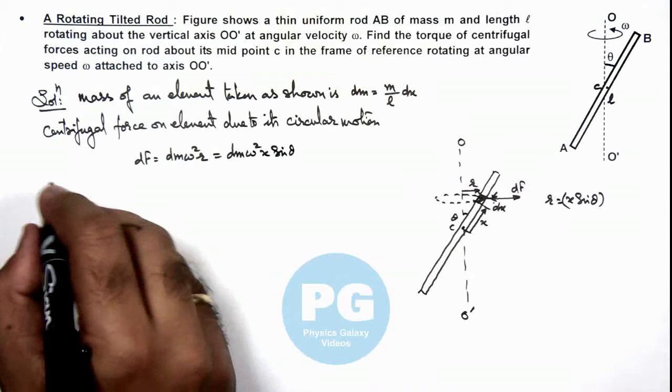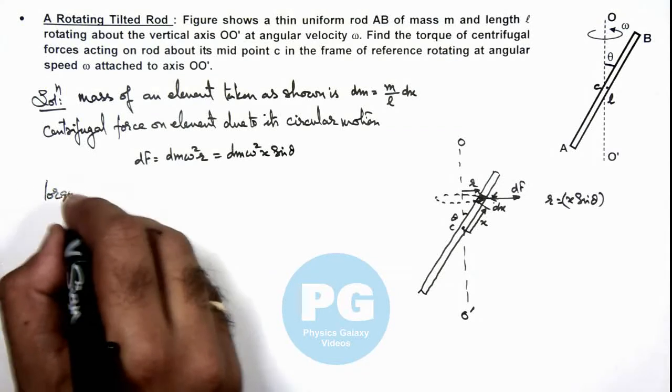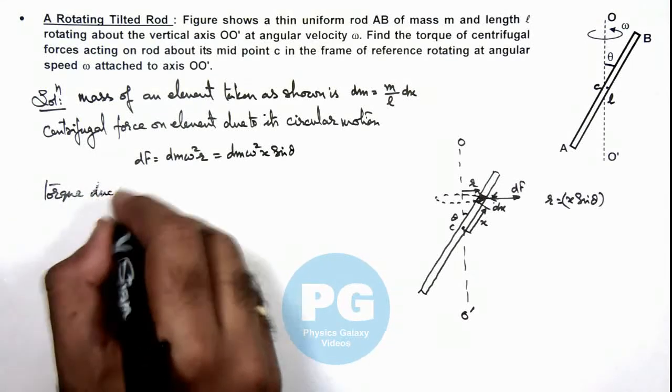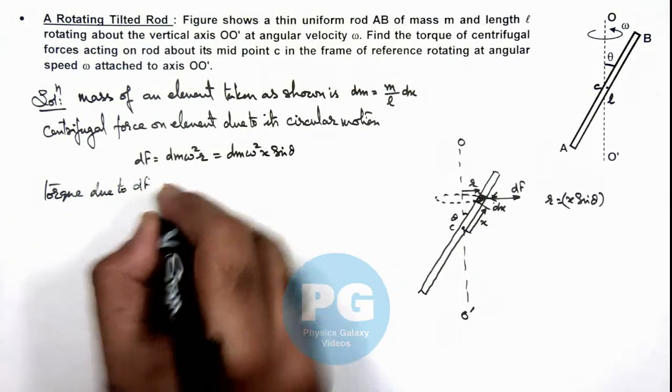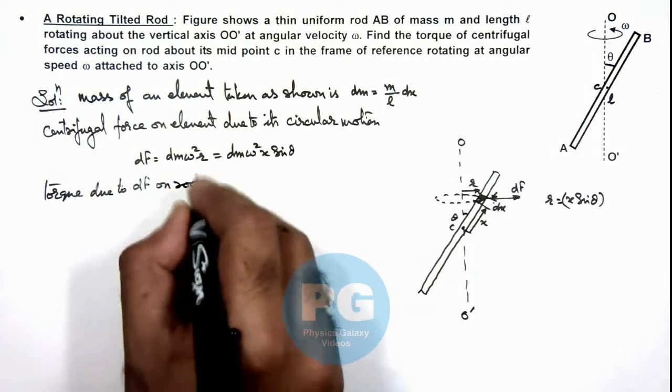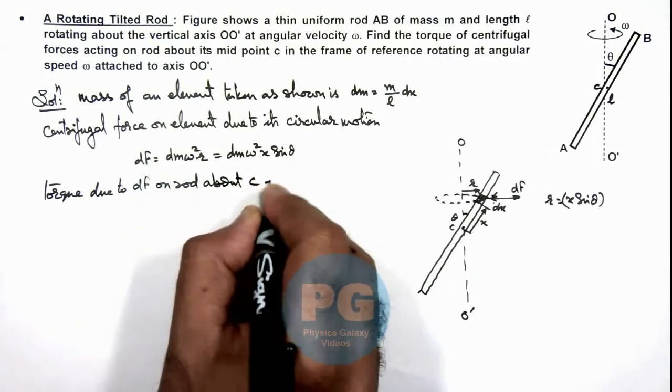Now if we calculate the torque due to df on rod about C, this can be written as d tau and that will be equal to df.